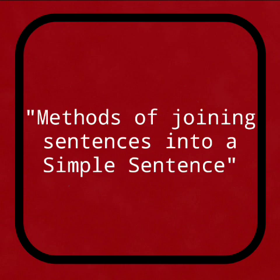You know it very well that there is only one independent clause in a simple sentence. That is, you will find a subject with a finite verb, and there may be an object or not. You will not find any dependent clause or sub-clause in a simple sentence. Although there is only one main verb — that is, finite verb — there may be several non-finite verbs. In this lesson, I am going to share with you some methods of joining sentences into a simple sentence.